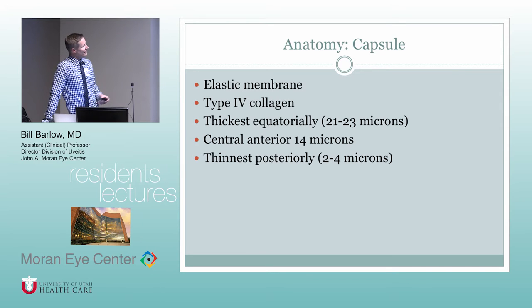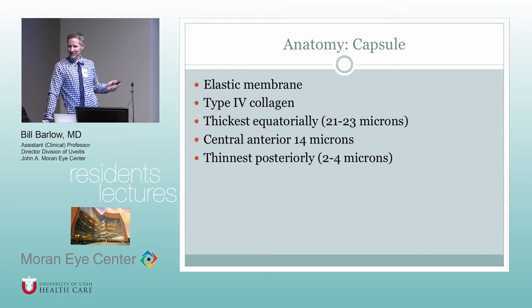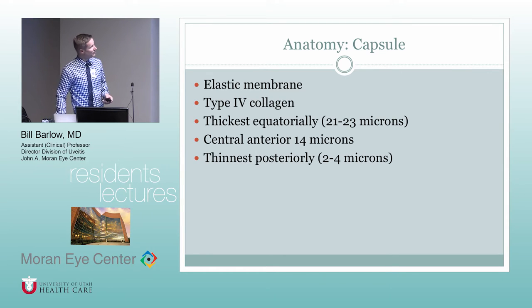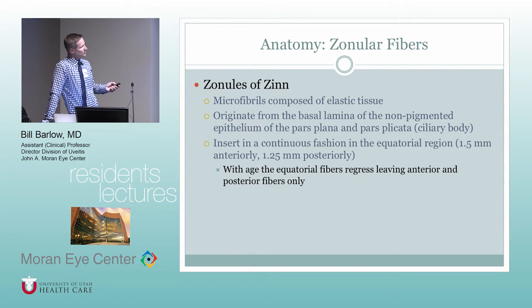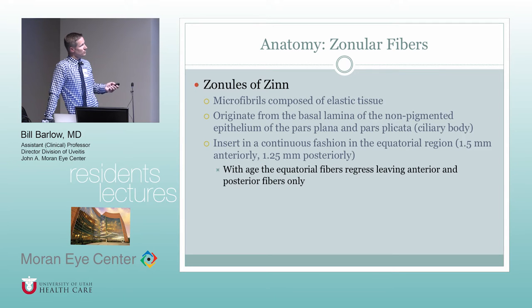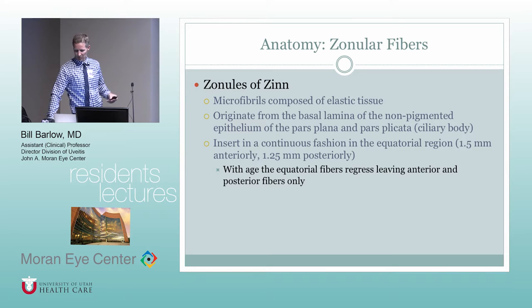The capsule is an elastic membrane of type 4 collagen. It's thinnest posteriorly at two to four microns — impressive how strong it is despite that. It's thickest equatorially and centrally at about 14 microns. The zonules are microfibrils composed of elastic tissue, originating from the non-pigmented epithelium of the ciliary body. They insert in a continuous fashion in the equatorial region, slightly more central anteriorly versus posteriorly. With age, equatorial fibers regress, leaving mostly anterior and posterior fibers.